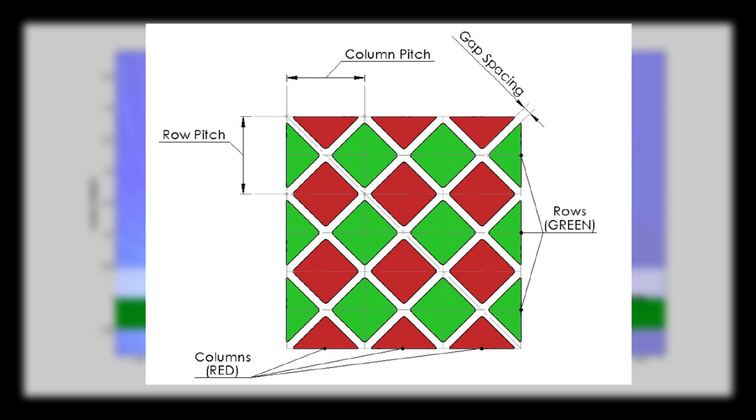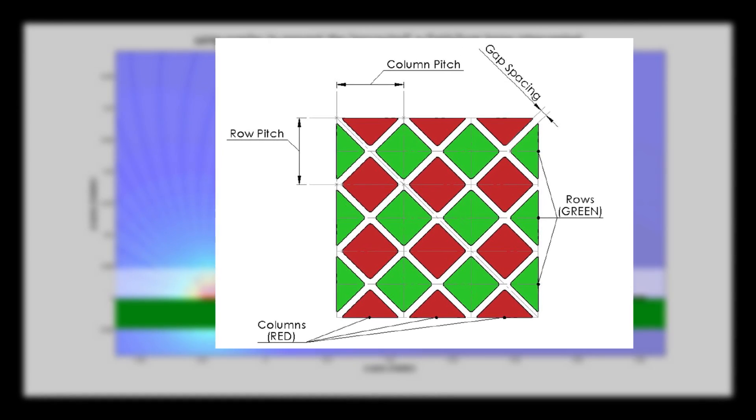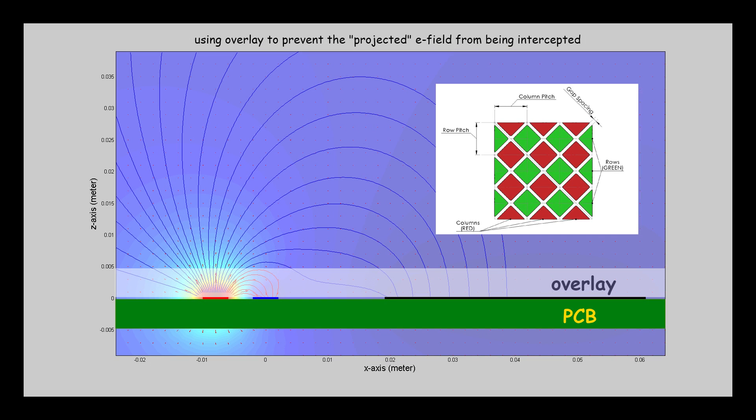In order to get good ΔCM and good percentage of change, it is recommended that the gap between the electrodes be made 0.6 of the overlay thickness.